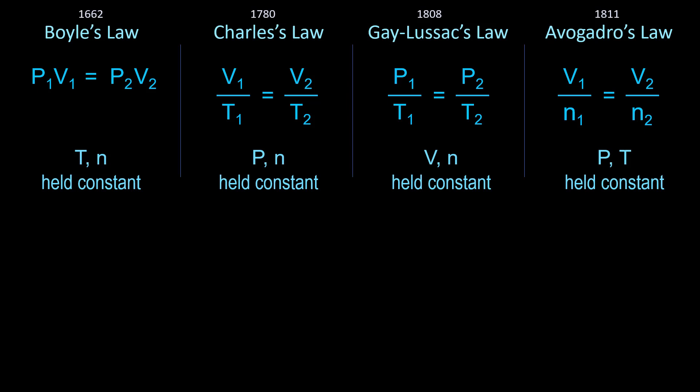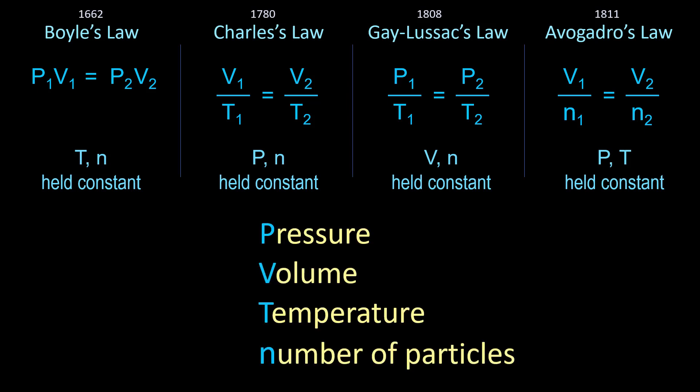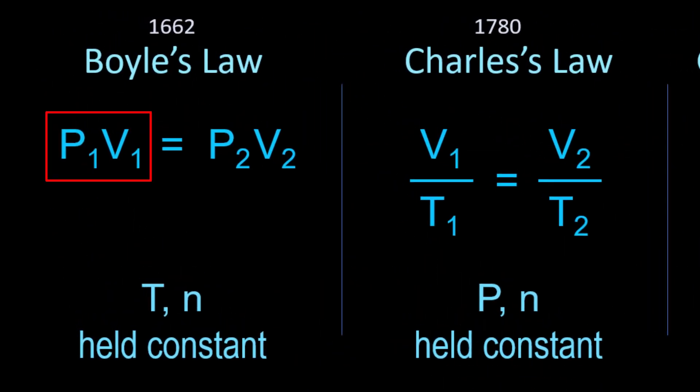Gases have four variables that define their behavior: pressure, volume, temperature, and number of particles. Each of these laws looks at the mathematical relationship of two of those four variables while holding the other two constant. Each equation represents an initial and final condition of a gas, indicated by the subscripts 1 and 2.